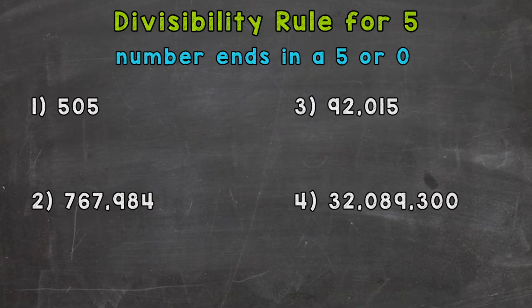And remember, when we're checking for divisibility, we're checking to see if we can divide without getting a remainder, so the given numbers work out exactly. We have four numbers here that we're going to see if they are divisible by 5, based on the rule at the top of the screen.